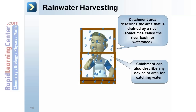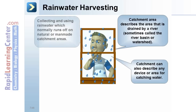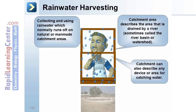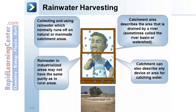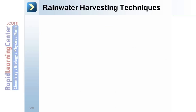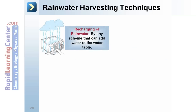A catchment can also describe any device or area for catching water — collecting and using rainwater which normally runs off on natural or man-made catchment areas. Rainwater in industrialized areas may not have the same purity as in rural areas. Rainwater harvesting techniques include recharging of rainwater by any scheme that can add water to the water table.